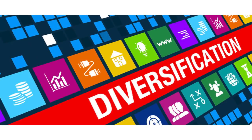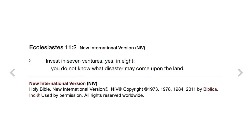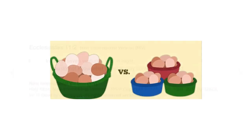Let's look at diversification. The mathematical benefits to portfolio theory were only proven in the last couple of years, and I've made a video a while back that discusses this in detail. But it's something that we can see as far back as in the Bible. Here we have a verse from Ecclesiastes that says, invest in seven ventures, yes in eight — you do not know what disaster may come upon the land. Diversification is a risk management technique, often explained simply as don't put all your eggs in the same basket.